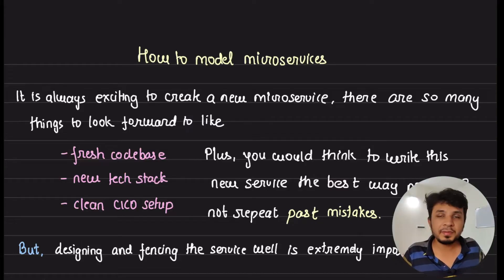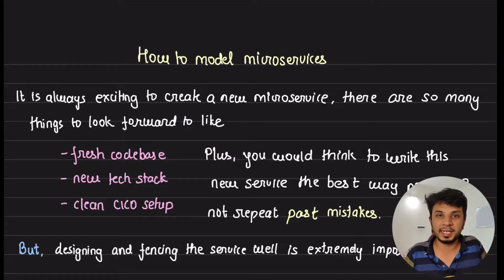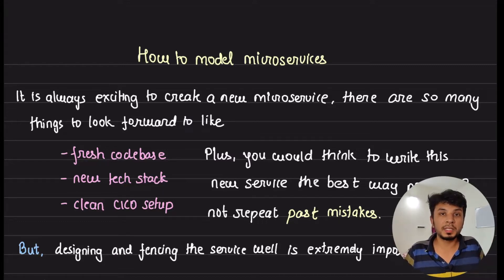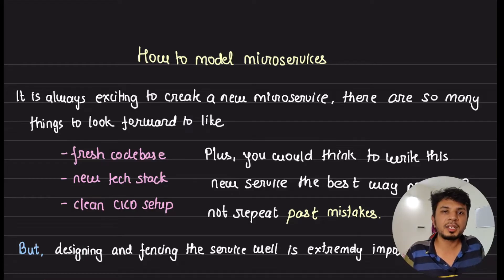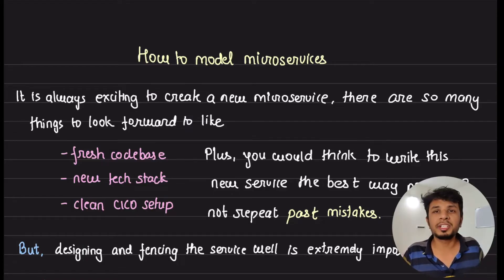In the previous video, we talked about the advantages of having a microservices-based architecture, and in this one we talk about ways to model a robust and flexible architecture using just two concepts: low coupling and high cohesion.